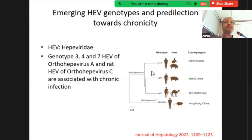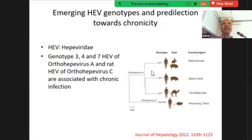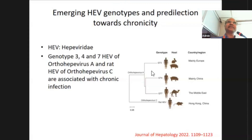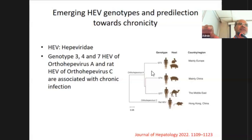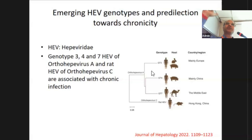Epidemiology clearly shows that genotypes three and four are mostly found in European countries and are associated with chronic hepatitis E. Genotype one is mostly found in India and Southeast Asia; genotype four is found in China and Hong Kong, where chronic hepatitis E cases from genotype four have also been documented.